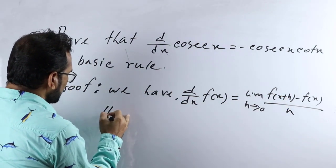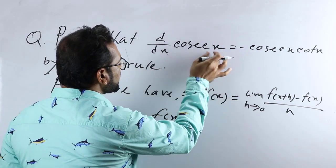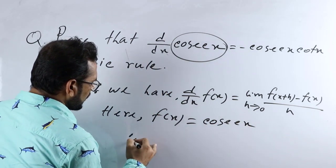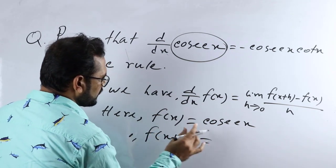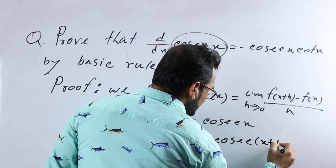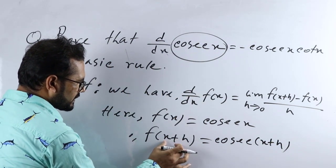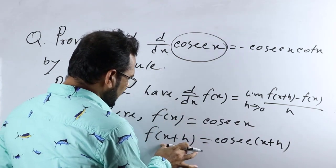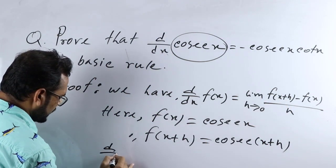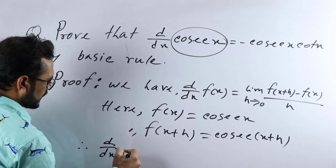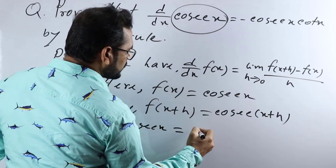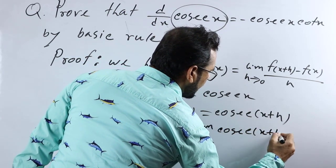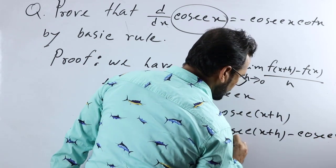After that we need to find f(x) and f(x+h). Here f(x) is given in our question — it is cosec x. So f(x) equals cosec x, and f(x+h) will be cosec(x+h), because we are replacing x by x+h. Now I put these into the formula: d/dx of cosec x equals limit h tends to 0, cosec(x+h) minus cosec x, divided by h.